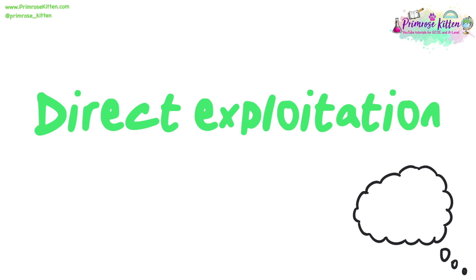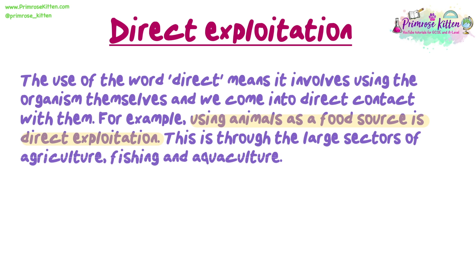During this video we will be looking at the different ways in which human activity is threatening to reduce biodiversity across the world. The first category we can put threats into is direct exploitation. The use of the word direct means it involves using the organisms and we come into direct contact with them. For example, using animals as a food source is direct exploitation, through the large sectors of agriculture, fishing and aquaculture.